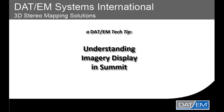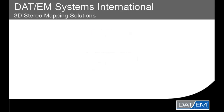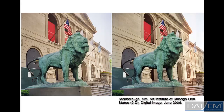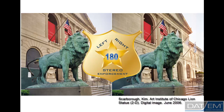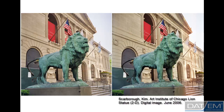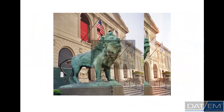In Summit, flight path images are always displayed horizontally across the screen regardless of the direction of the original flight path. This enforces the left-right stereo view to match human eye configuration. As our eyes are located left to right on our face, we cannot view stereo images that are stacked in an up-down alignment.